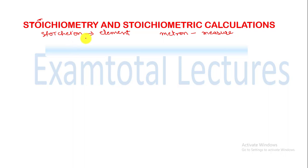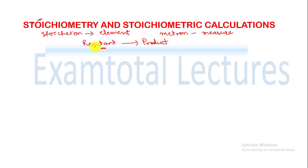In a chemical reaction, reactants react with each other to give products. Stoichiometry is about calculating the amount of reactant and the amount of product produced. How much amount of reactant will react and how much product will be produced is important. For proper calculation, you need a balanced chemical equation.